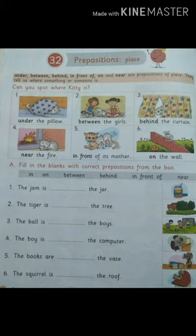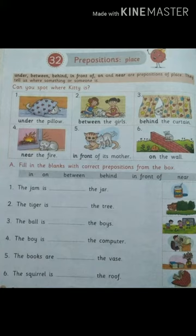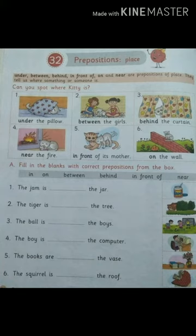See question number A. Students, write question number 2 in your CW notebook: fill in the blanks with correct prepositions from the box. There are six options. Look at the pictures and choose the correct option. First sentence: the jam is dash the jar. Where is the jam? The answer is 'in' — the jam is in the jar. Very good students.